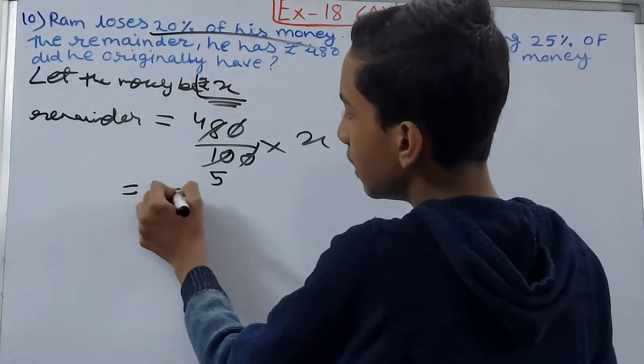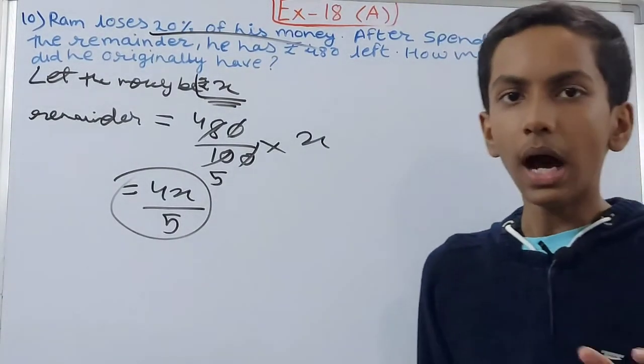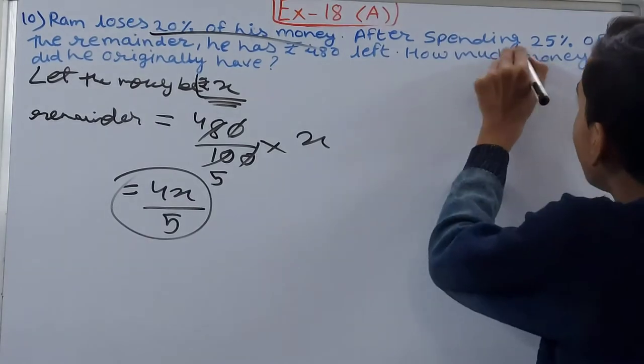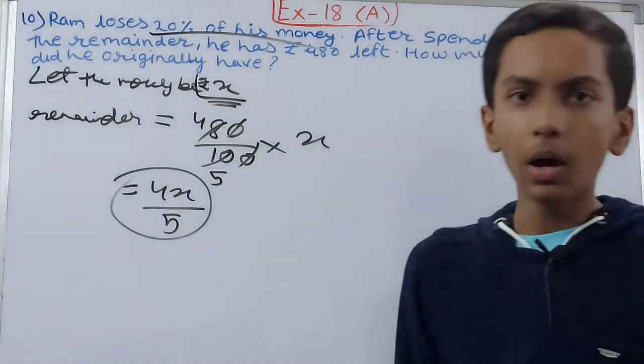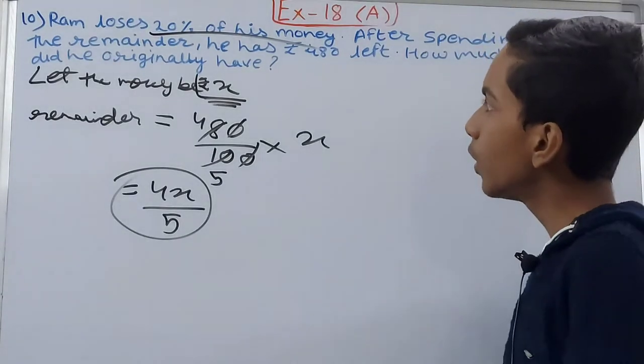So the remainder money that he had was rupees 4x upon 5. Now out of this 4x upon 5, he spent how much? 25 percent of the remainder.